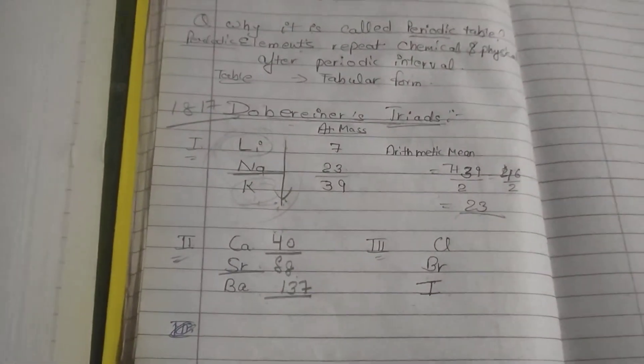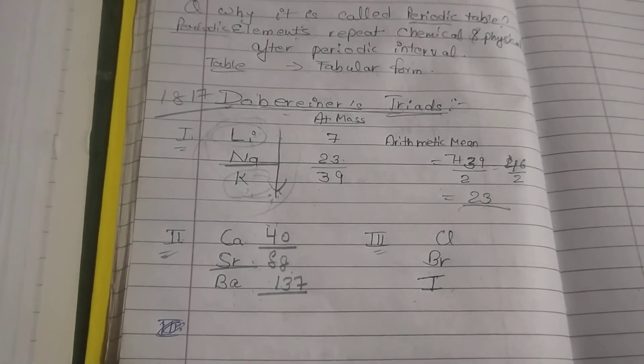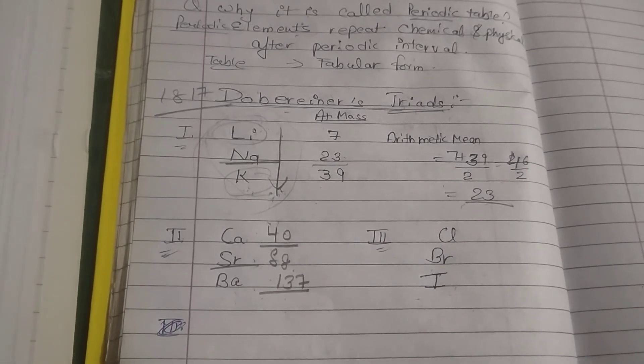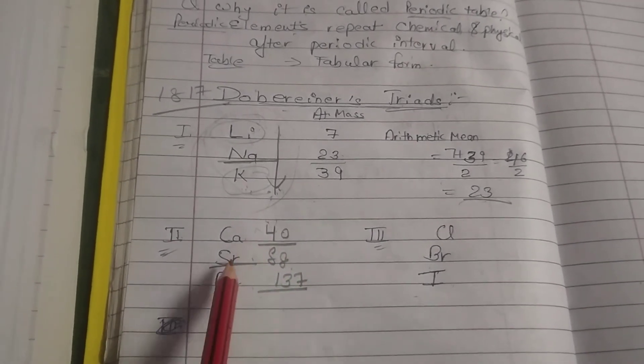That means, whatever three triads he has given, the chemical properties are the same, and the arithmetic mean of the atomic mass equals the middle atomic mass.